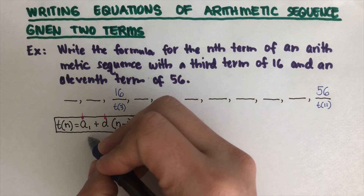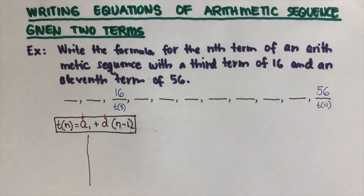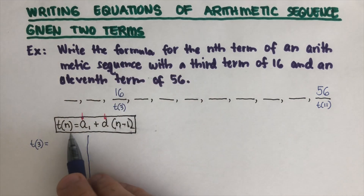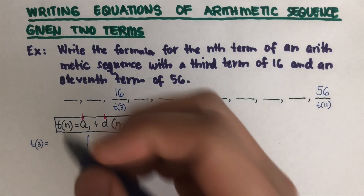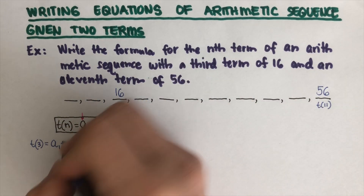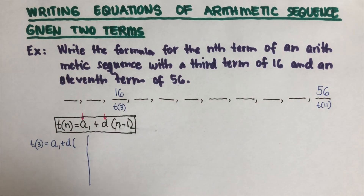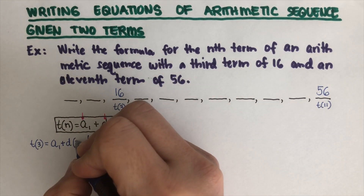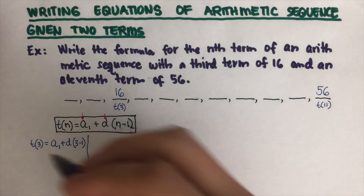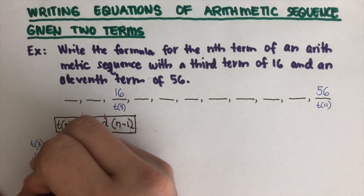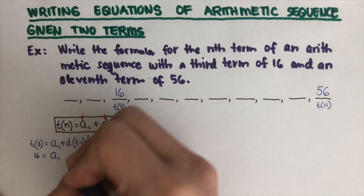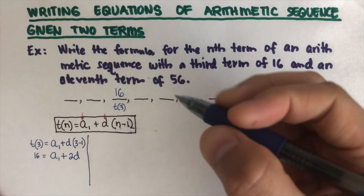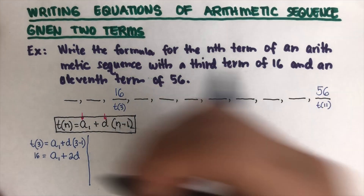First, we use t3 = 16. We substitute n = 3 into the general formula: t(3) = a1 + d(3 − 1), which simplifies to 16 = a1 + 2d. This is our first working equation. We still don't know a1 or d.